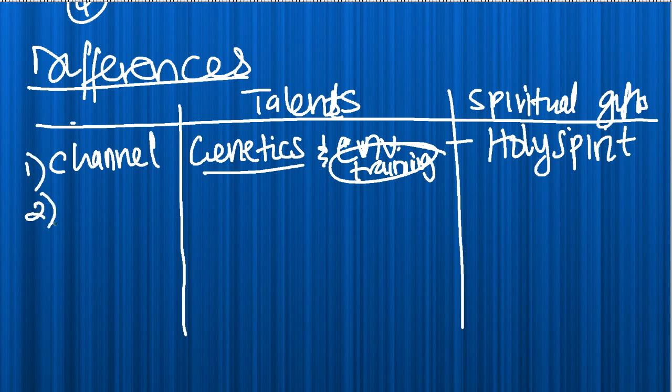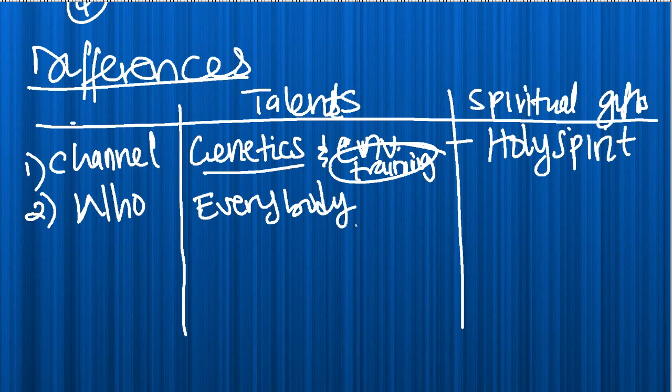So, that's one difference that I can think of. Another difference is that of the person who gets them. Who gets them. Well, talents. God gives talents to everybody. Both Christians and non-Christians. Everybody gets them. See, God is a God who makes his sun to shine. And both the godly and the ungodly. And he gives rain to both the godly and the ungodly. God blesses unbelievers quite a bit. And one of the blessings he gives them is talents. But spiritual gifts are given only to Christians.